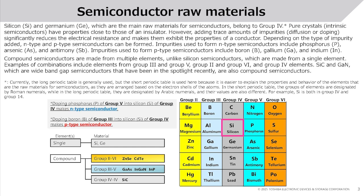Compound semiconductors are made from multiple elements, unlike silicon semiconductors which are made from a single element. Examples of combinations include elements from Group 3 and Group 5, Group 2 and Group 6, and Group 4 elements. SiC and GaN, which are wide band gap semiconductors that have been in the spotlight recently, are also compound semiconductors.